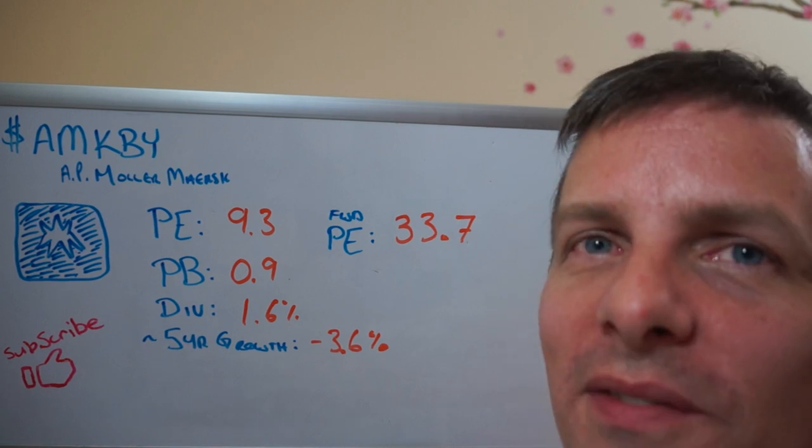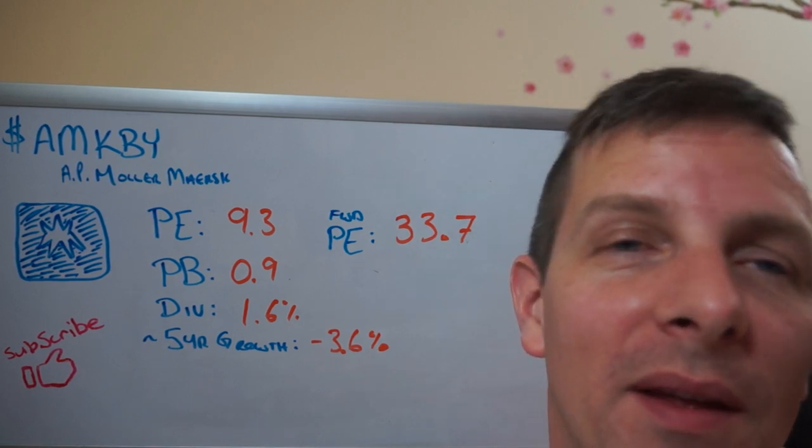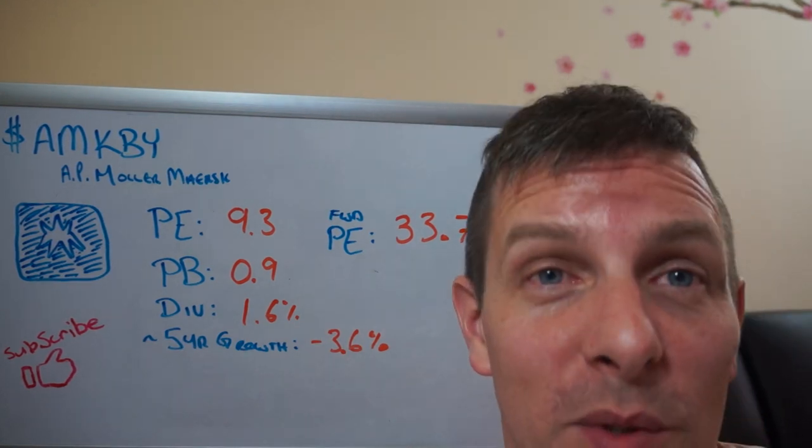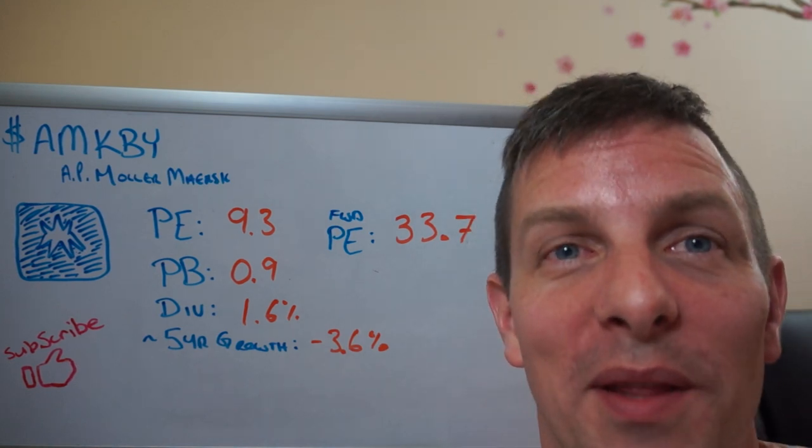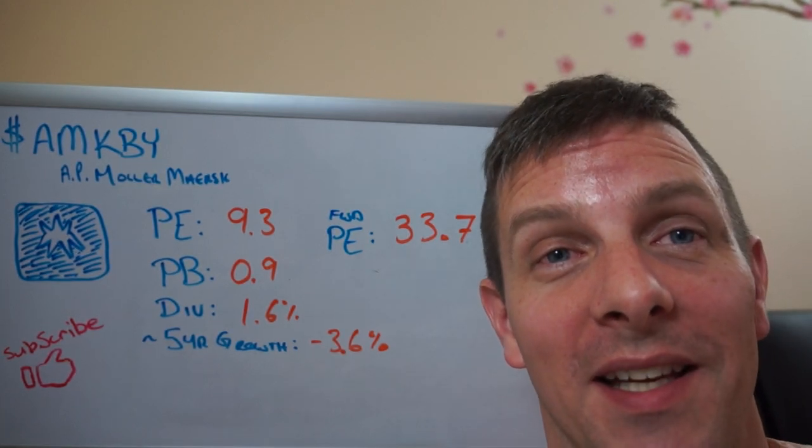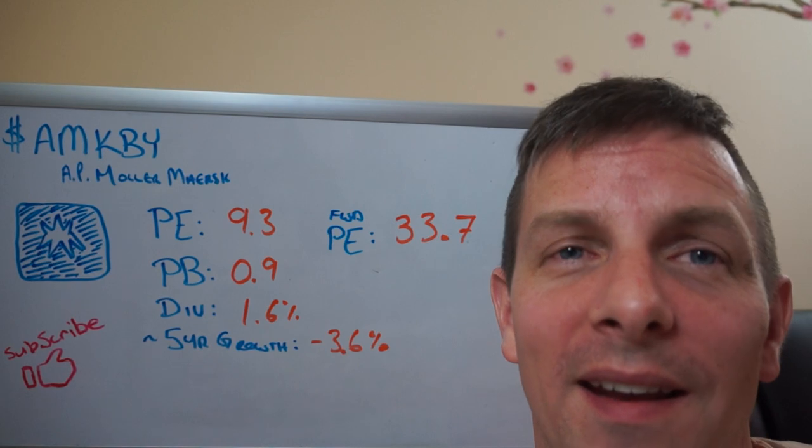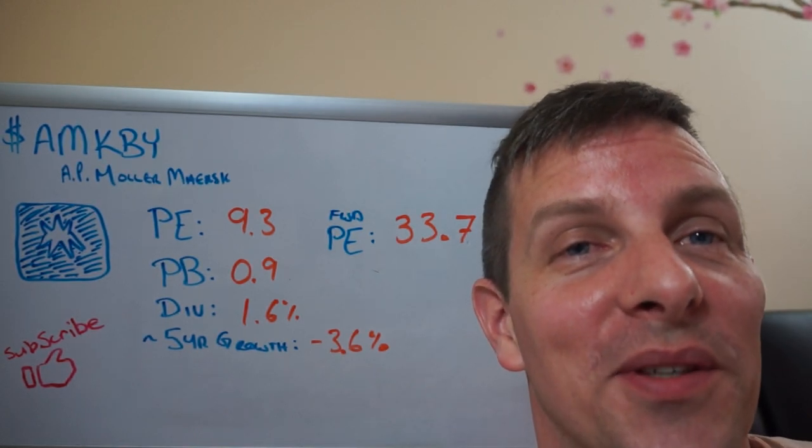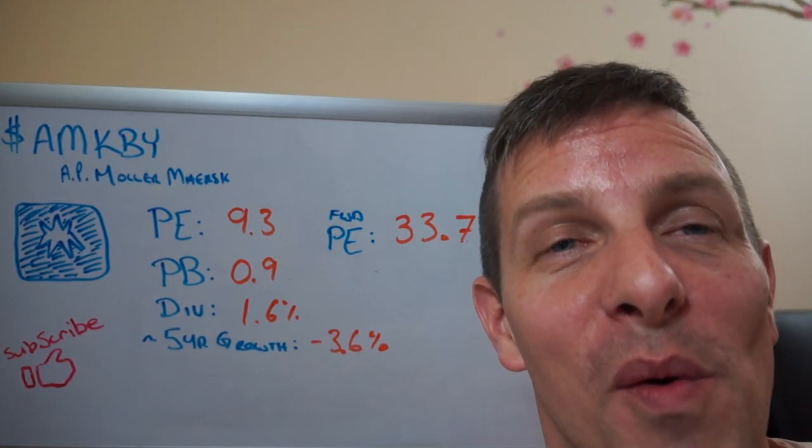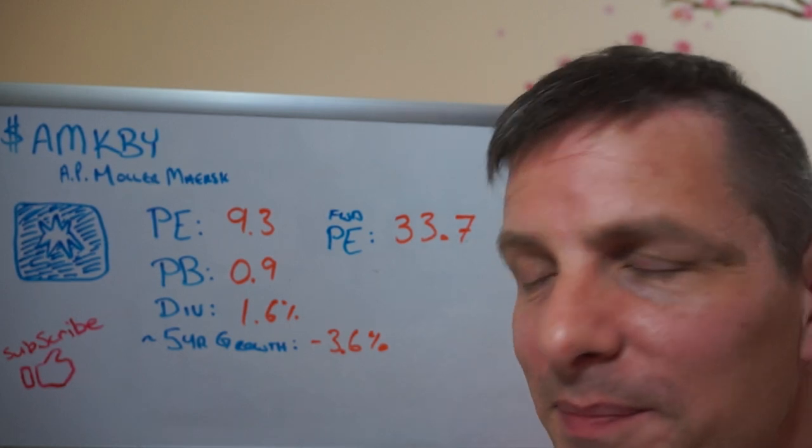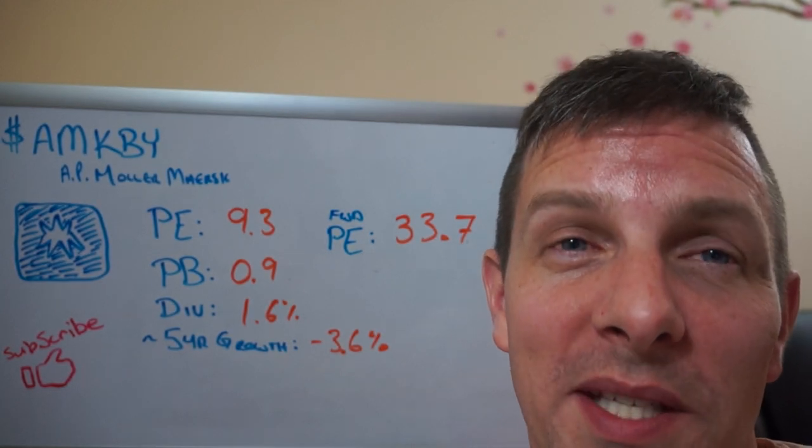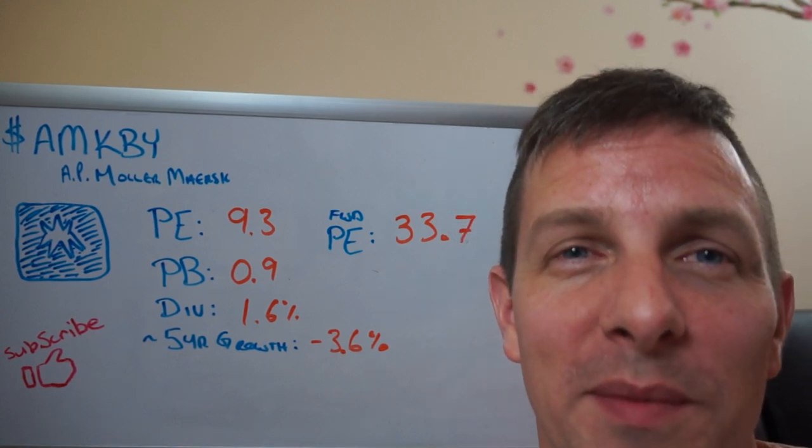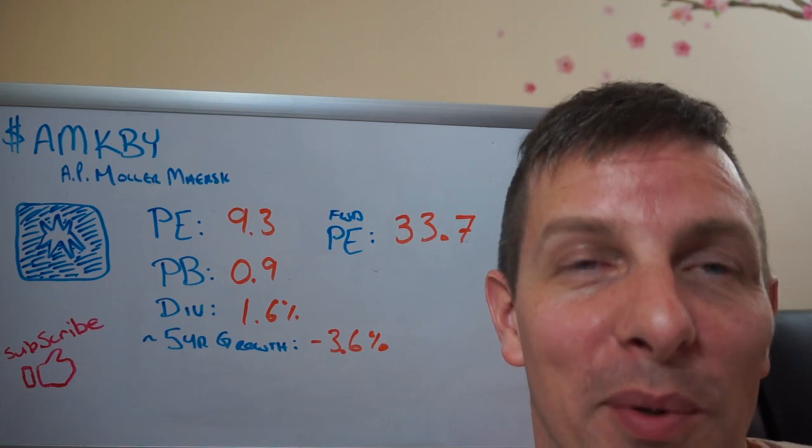Now, we're going to talk about the American Depository Receipt for this company. The ticker symbol is AMKBY, and its stock price is at $7.08, which gives it a PE ratio of 9.3, which is pretty cheap it sounds like. But the forward PE ratio is expected to be 33.7, which is quite a bit higher, suggesting quite a bit slower growth in the next year or so. And I'll get to that in a bit. Its price to book ratio is 0.9, pretty cheap for any company. That said, this industry itself is generally valued lower because of how cutthroat it is and how cyclical it is. Its dividend is at 1.6%, so nothing exciting I guess.